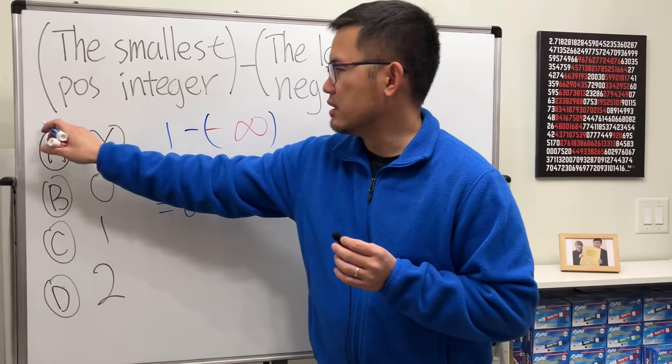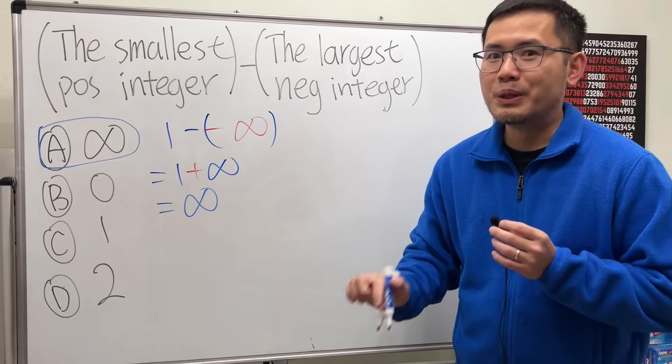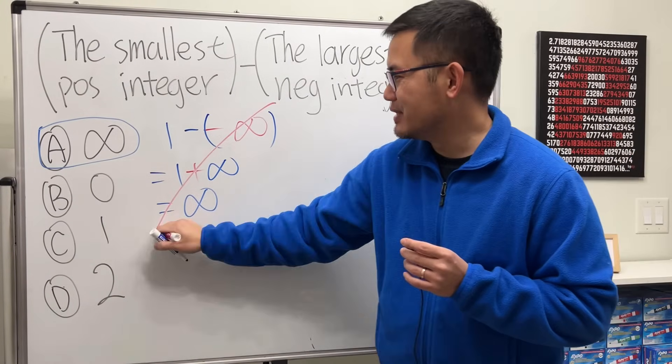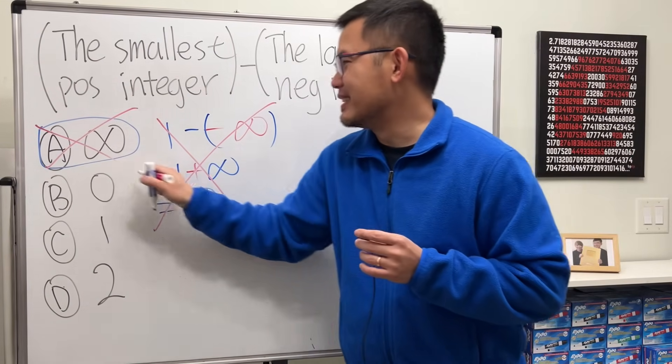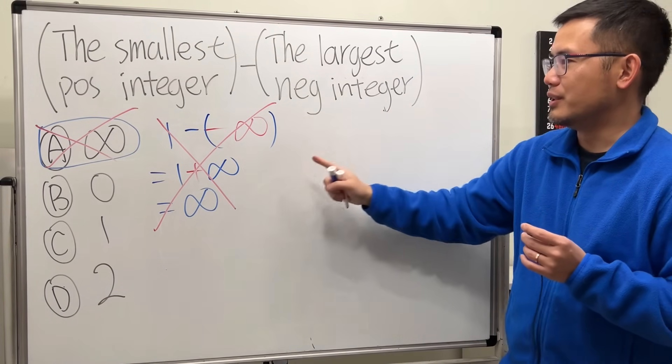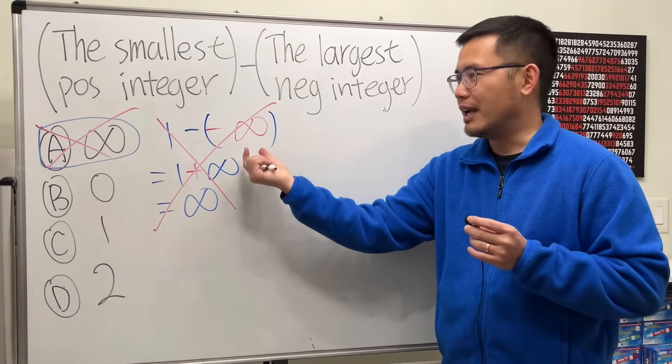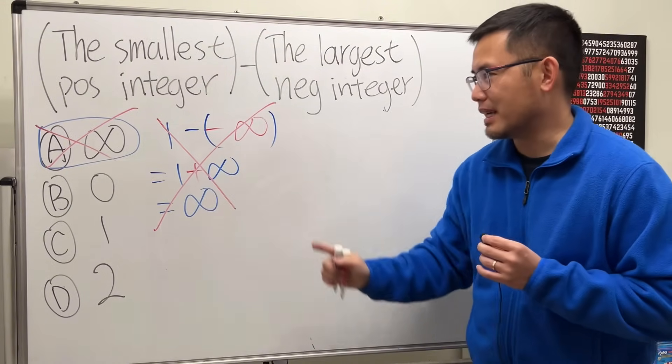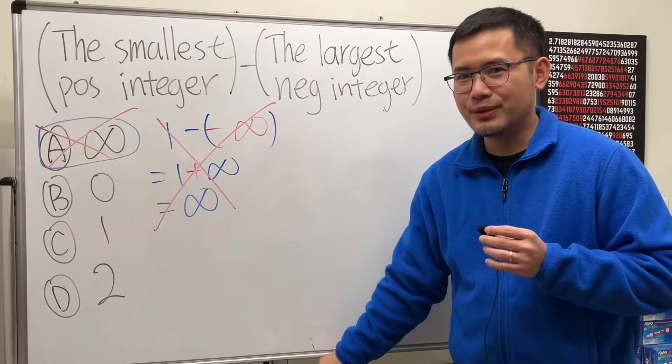And the answer is A? No, this right here is actually incorrect. This is not the answer, because the largest negative integer is not negative infinity. I know infinity is huge, but no, it's not like that. And this is how we can see it.